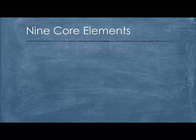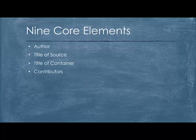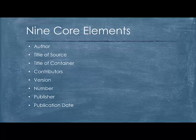There are nine core elements of MLA-8: Author, Title of Source, Title of Container, Contributors, Version, Number, Publisher, Publication Date, and finally Location. Not all of these elements will be used in our citation.